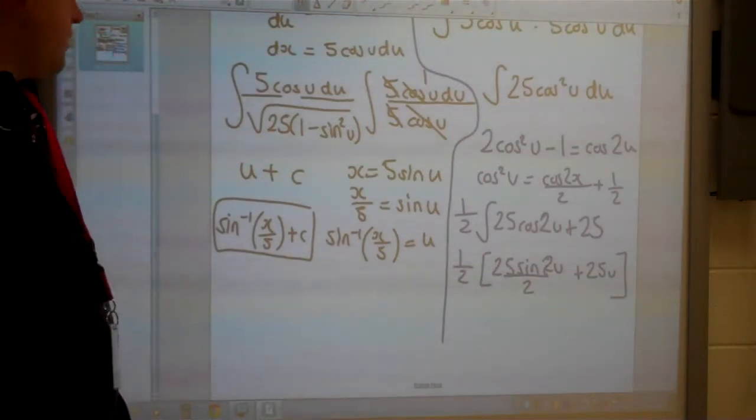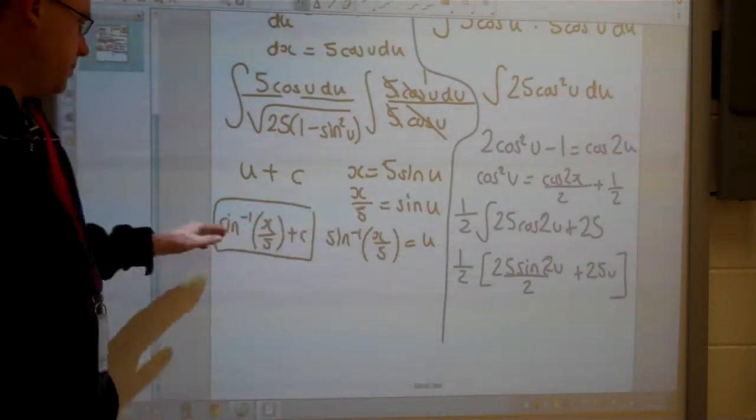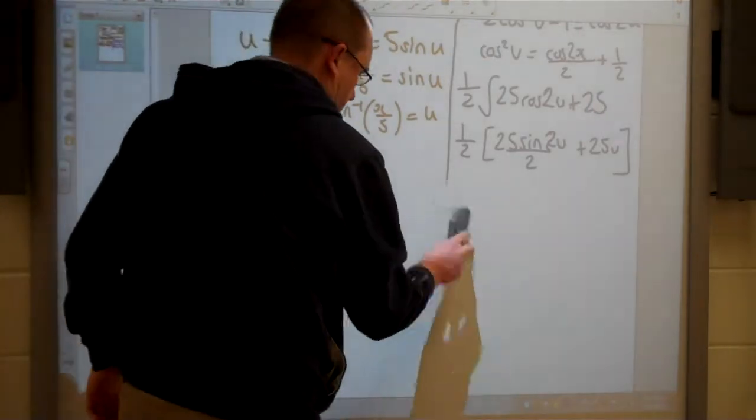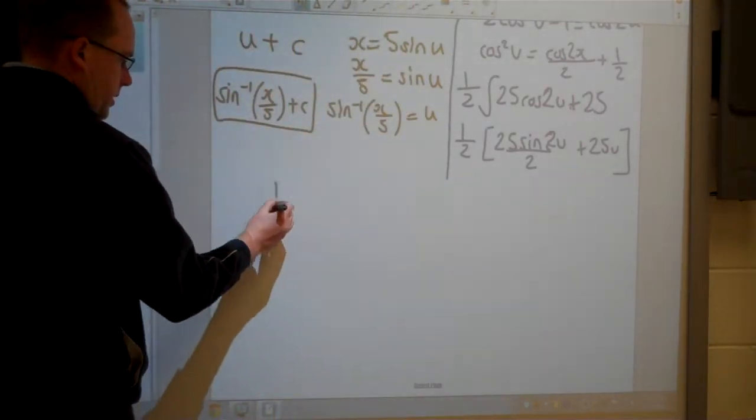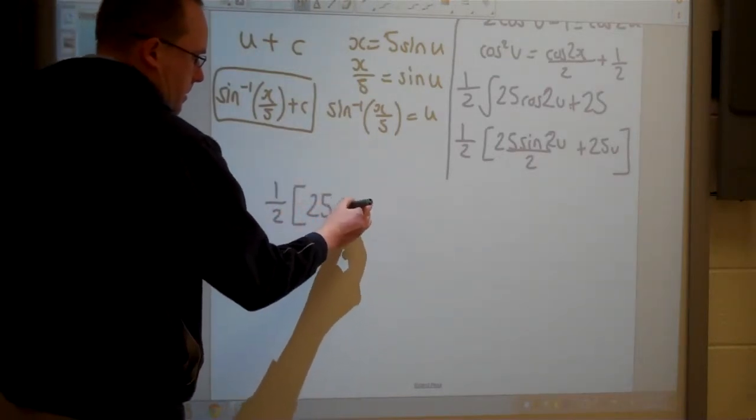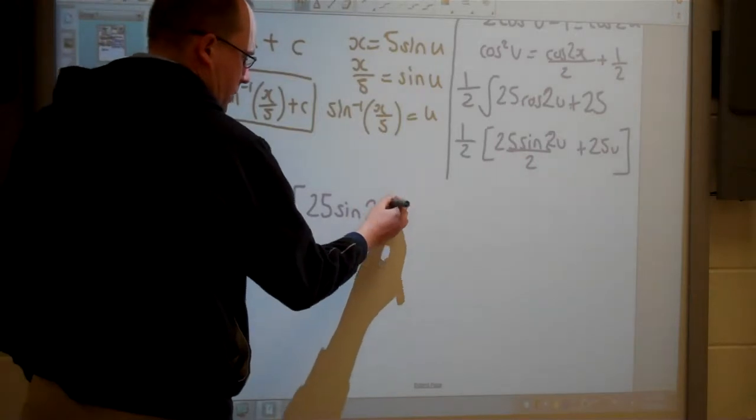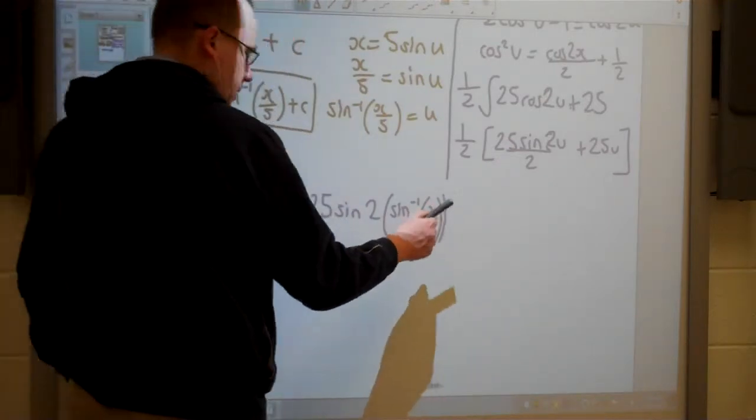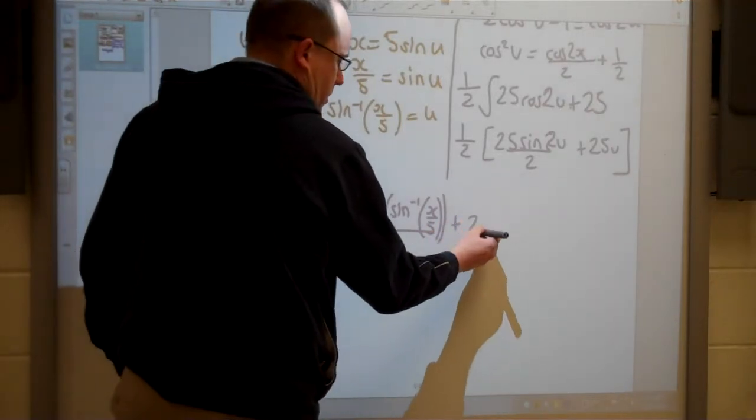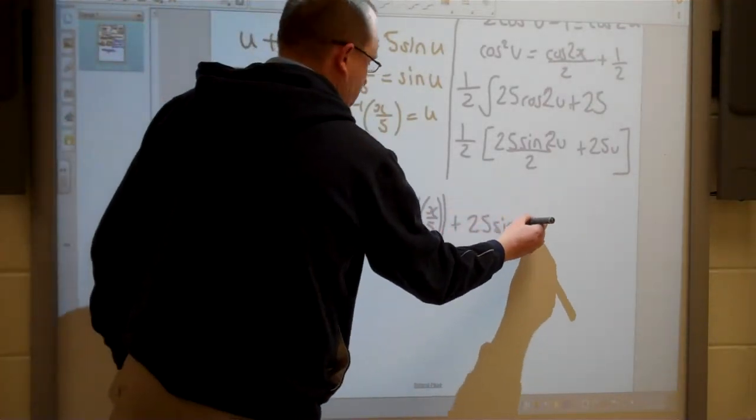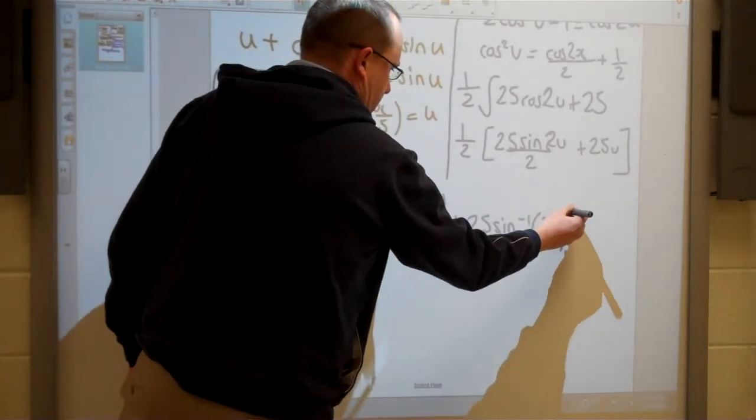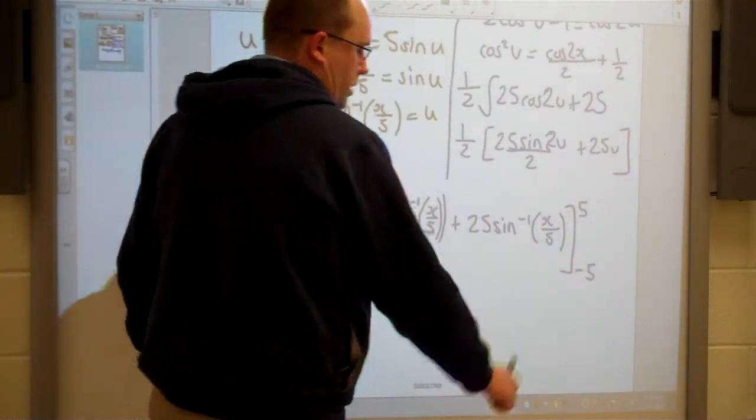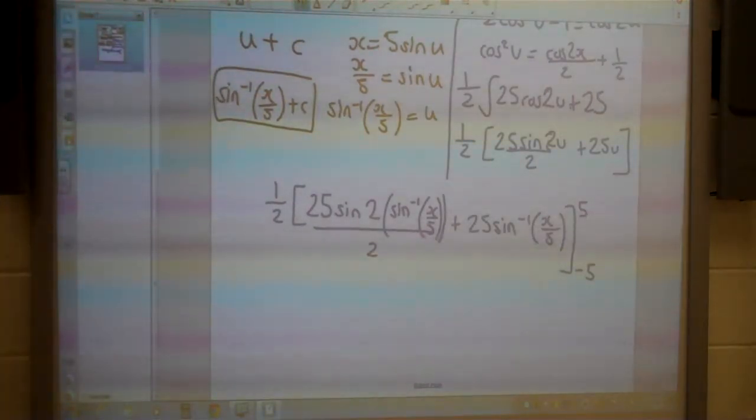And now we can substitute back for u. And we have it from the previous question because we used the same substitution. u equals sine to the negative 1 of x over 5. And as this is starting to get a little long I'm going to come across here to this side. And this is over 2. And 25u is 25 times all of this. Now my question's back in terms of x. I'm quite happy to go ahead and put my limits back in there. So the original question said 5 and negative 5. So I can go back and substitute those in.